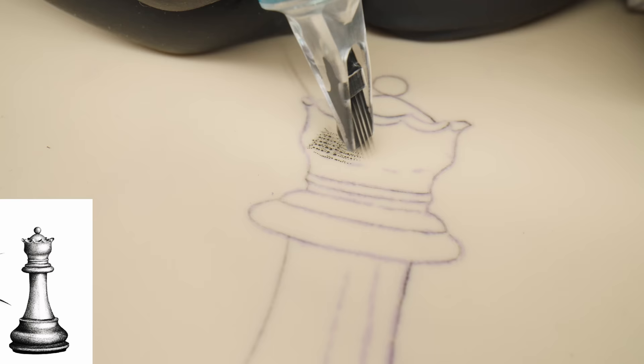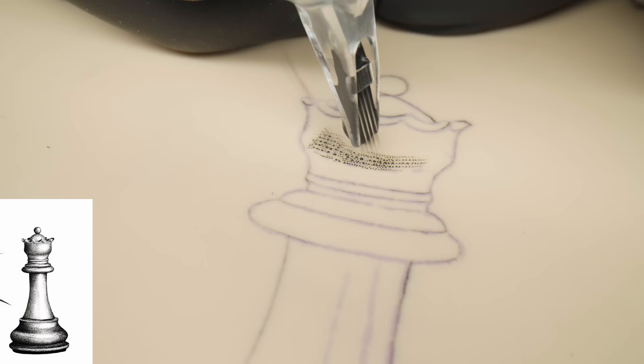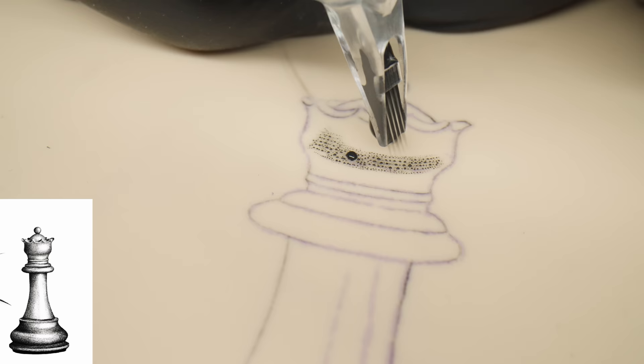The advantage of this technique is that it allows tattooing in both directions, forward and backward simultaneously, making it twice as fast as, for example, whip shading, where you move the needle in only one direction. However, it requires more practice because of the faster pace.